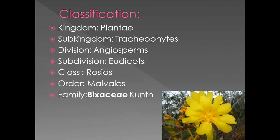This family belongs to division Angiosperms. The characters for Angiosperms are they show presence of double fertilization and the ovules are enclosed in ovary wall. Then they belong to subdivision Eudicots. The meaning of Eudicots is that whenever we germinate the seeds of this plant, they will produce two leaves at a time. So those plants we categorize as Eudicots.